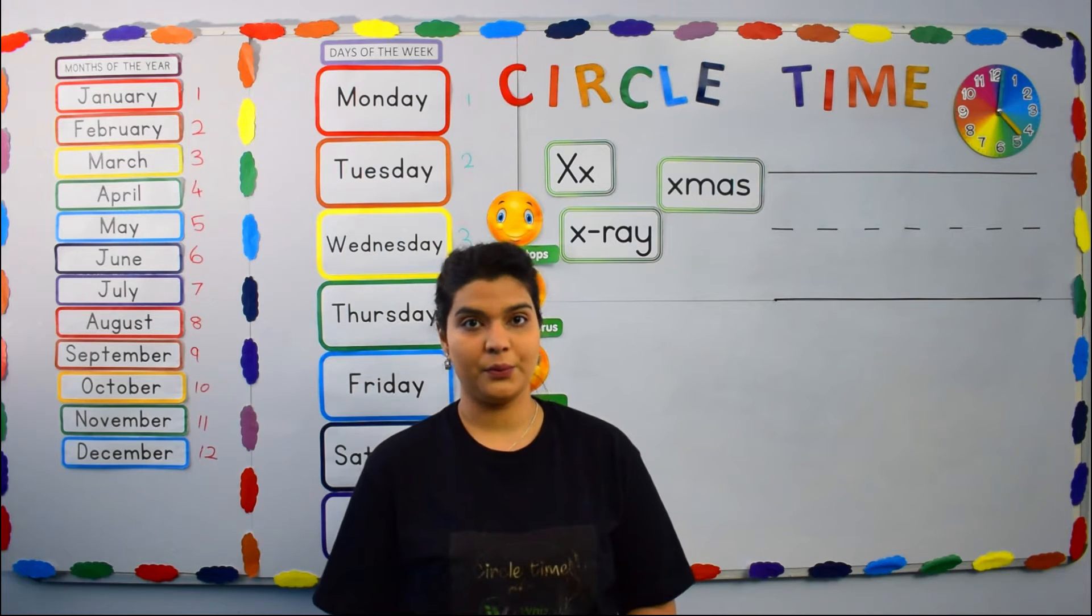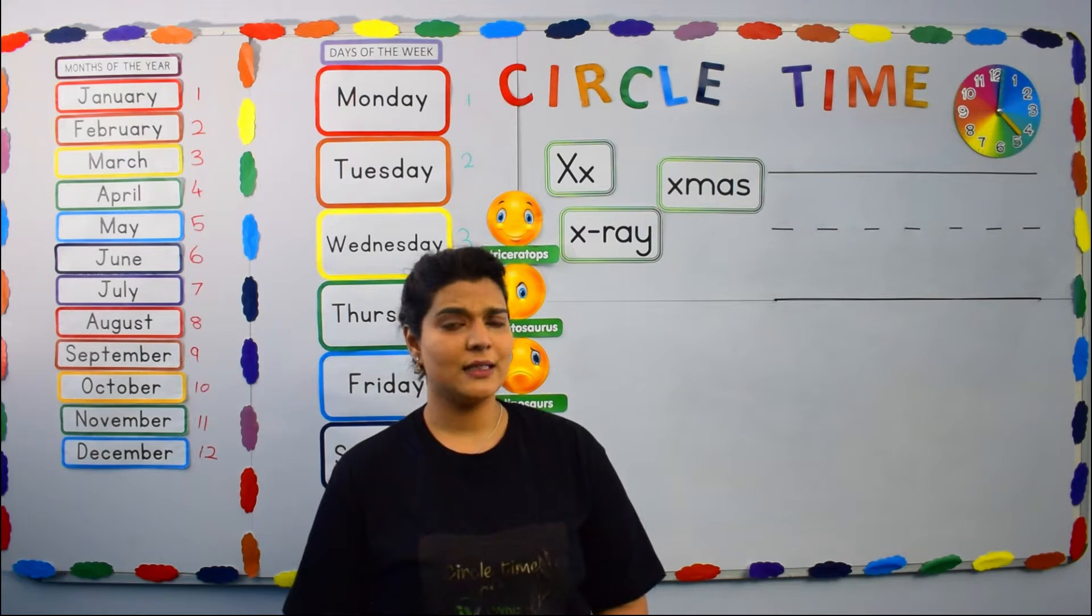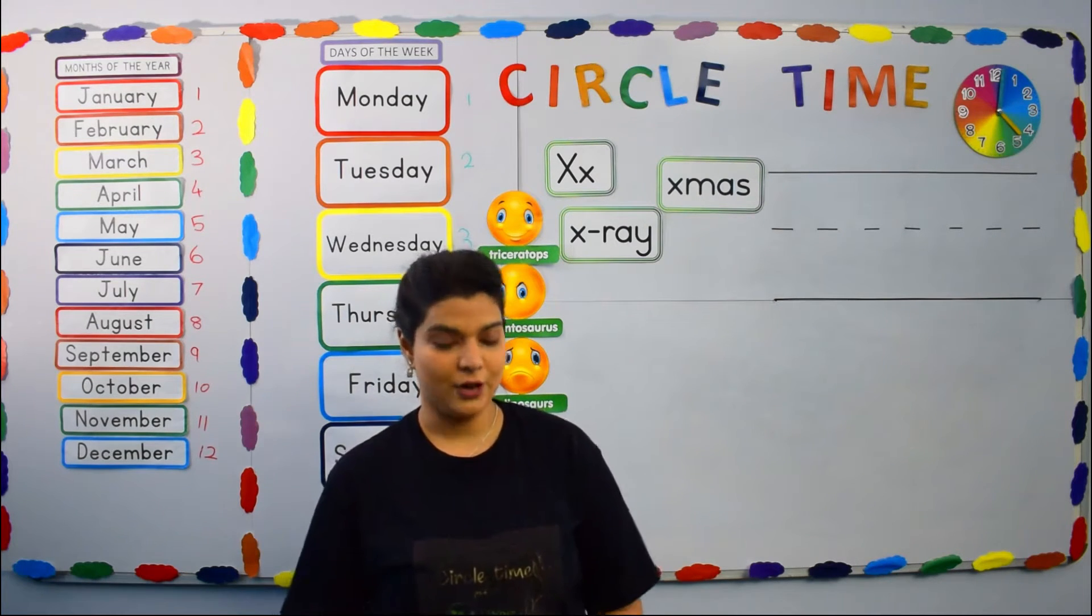Another word that starts with the letter X is xylophone. Xylophone. That is what we're going to be drawing a little later. Before we do that, let's write the letter X.